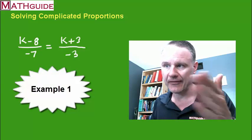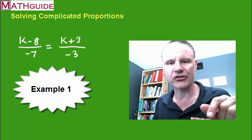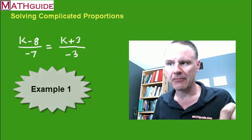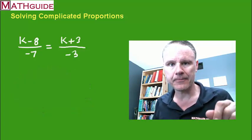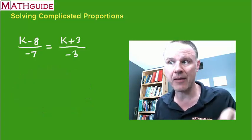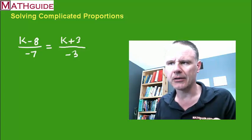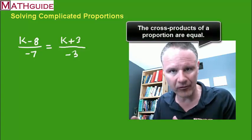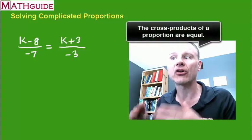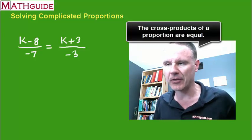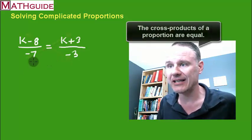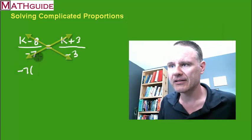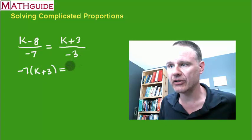Alright here's our first example. I've got a proportion. In other words I've got two fractions that are equal to each other. My variable here is k, and we're going to solve for the k that makes this proportion true. So how do we do it? Well in the last section you saw this property that when we had a proportion we can cross multiply. The cross products have to be equal. So in other words if I take negative 7 times the k plus 3, it's got to be equal to negative 3 times the k minus 8.